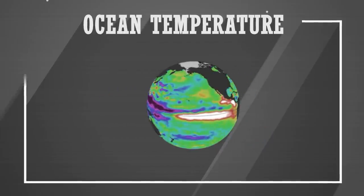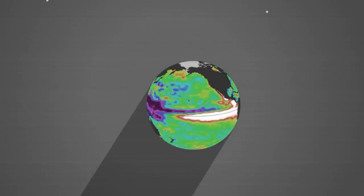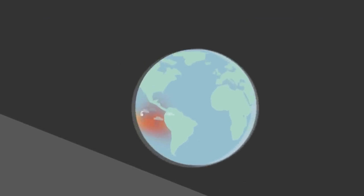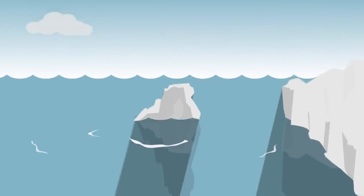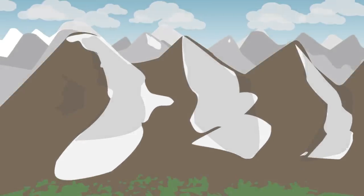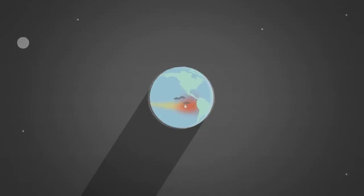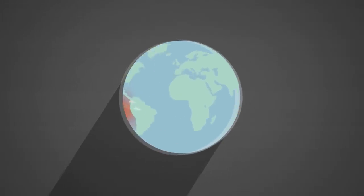Our planet has changed dramatically since the last big El Niño in 1998. With climate change and the general trend towards a warmer global ocean, the loss of Arctic sea ice and of over a million square kilometers of summer snow cover in the northern hemisphere, this El Niño is playing out in uncharted waters.